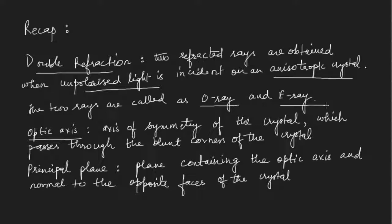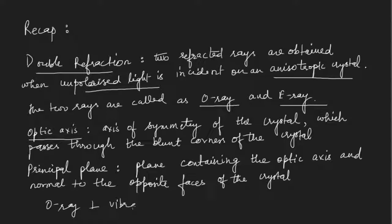The principal plane is defined as the plane containing the optic axis and normal to the opposite faces of the crystal. Whenever we talk about the polarization of the O-ray and E-ray, we refer to the principal plane. The O-ray has vibrations perpendicular to the principal plane, and the E-ray has vibrations parallel to the principal plane.